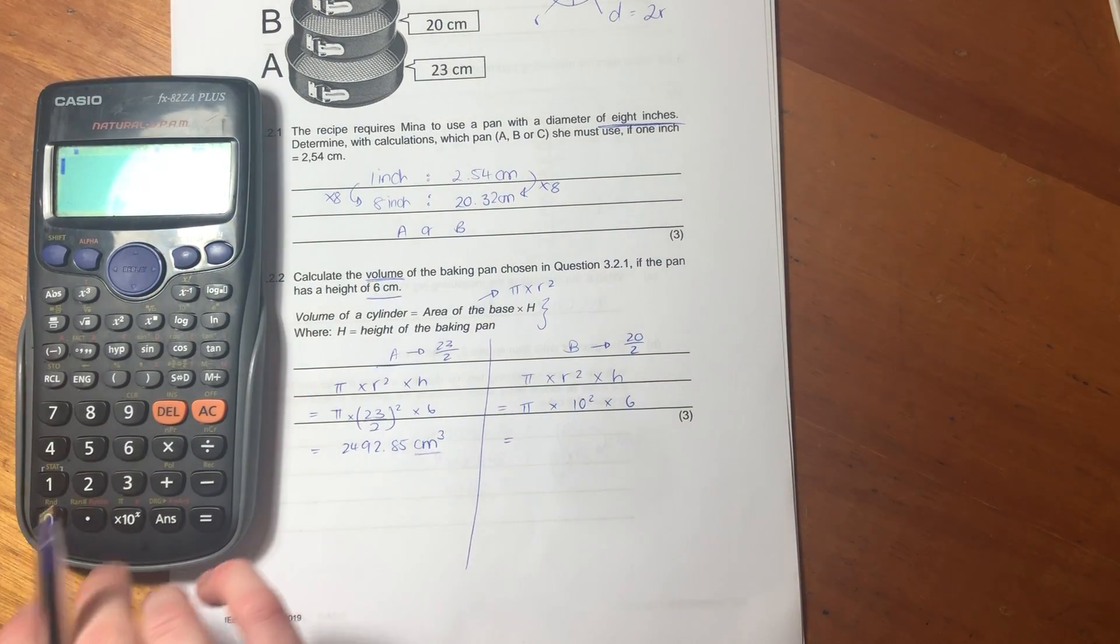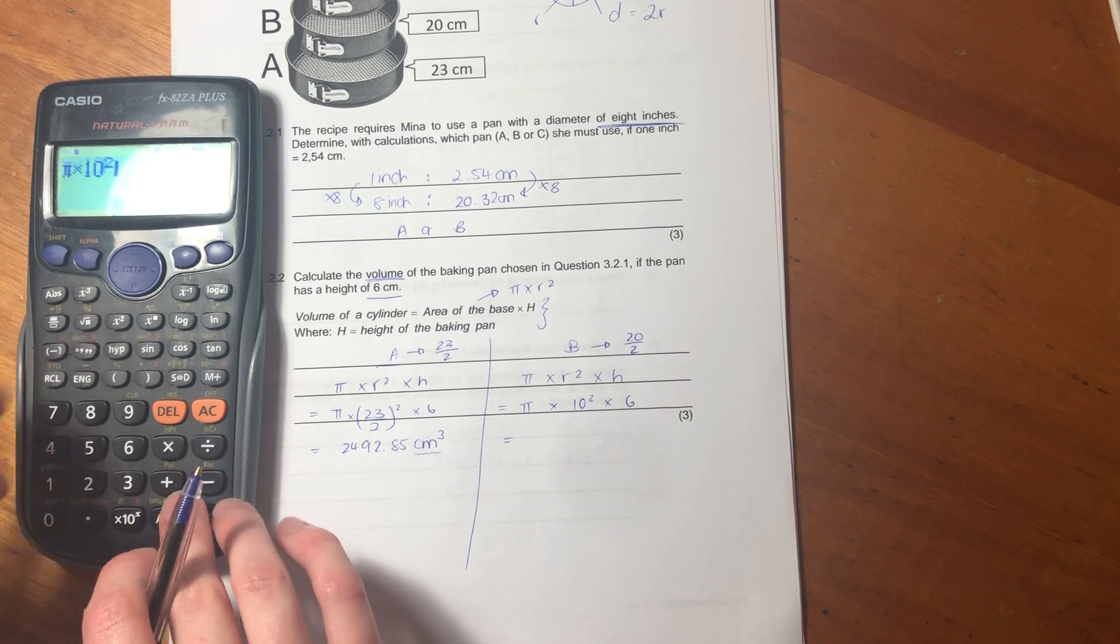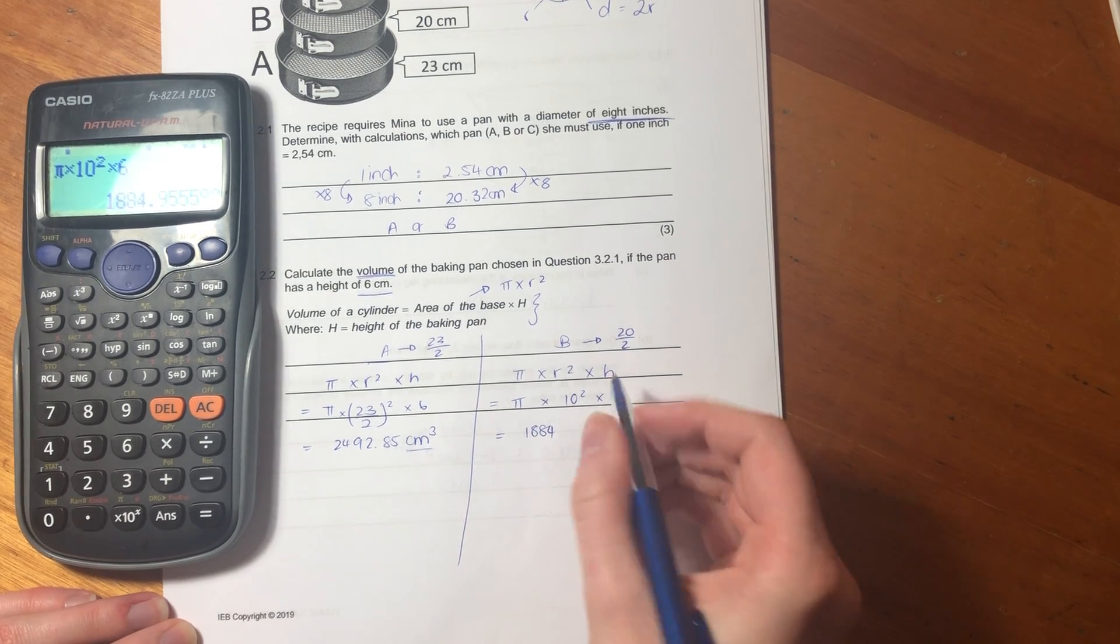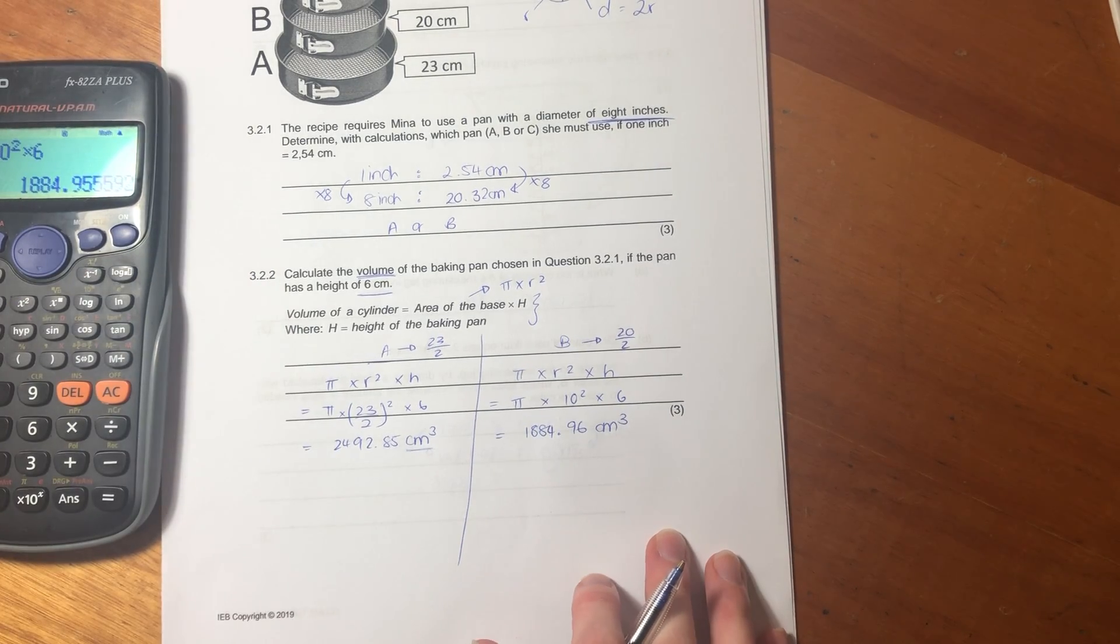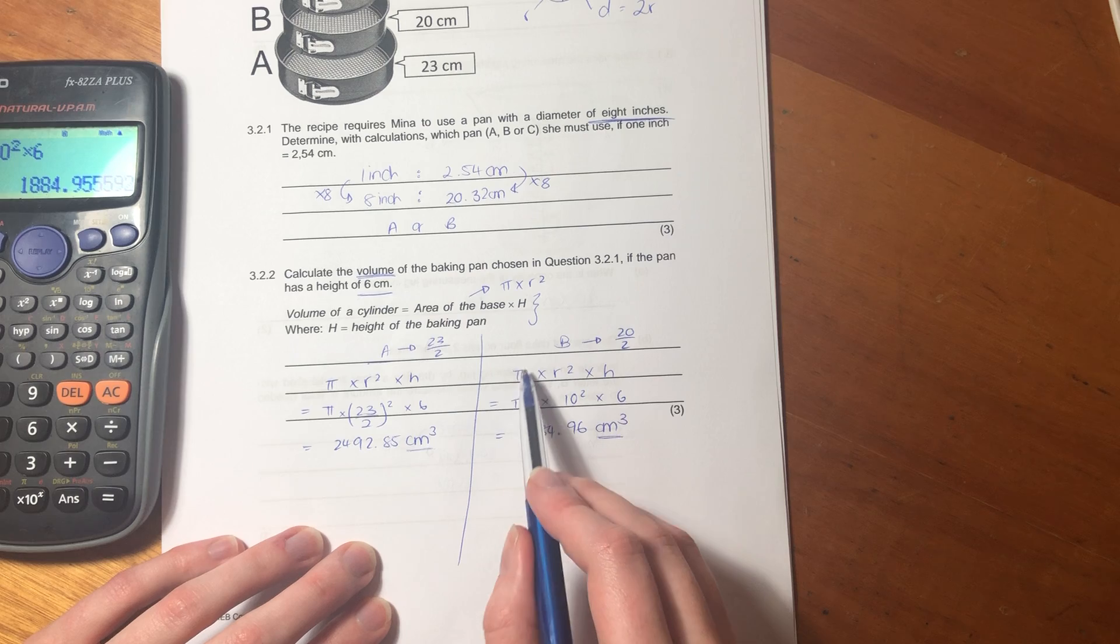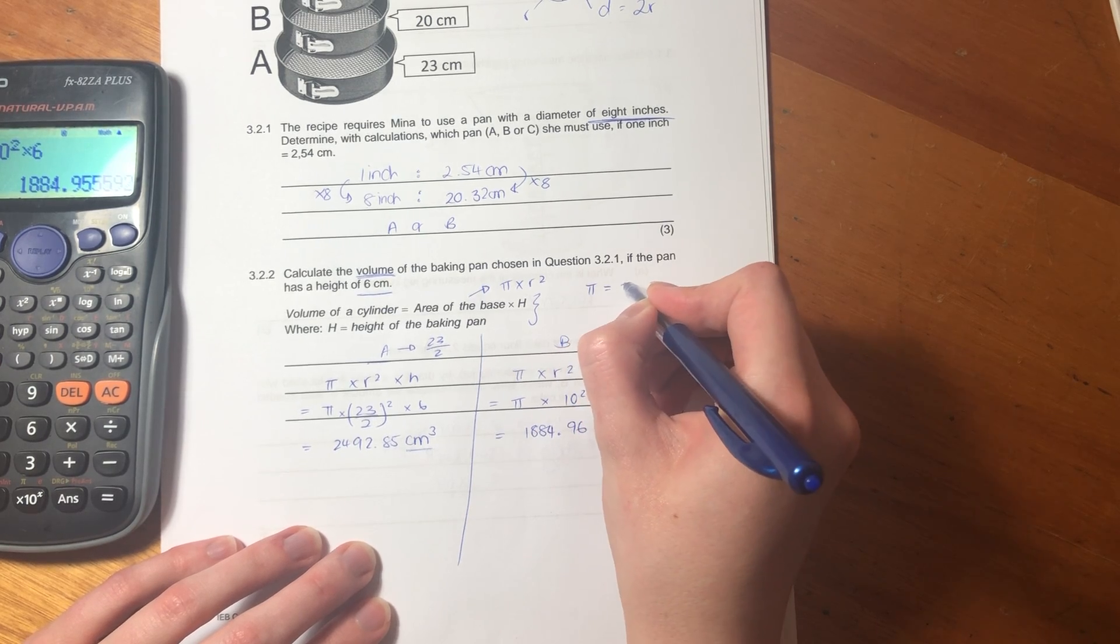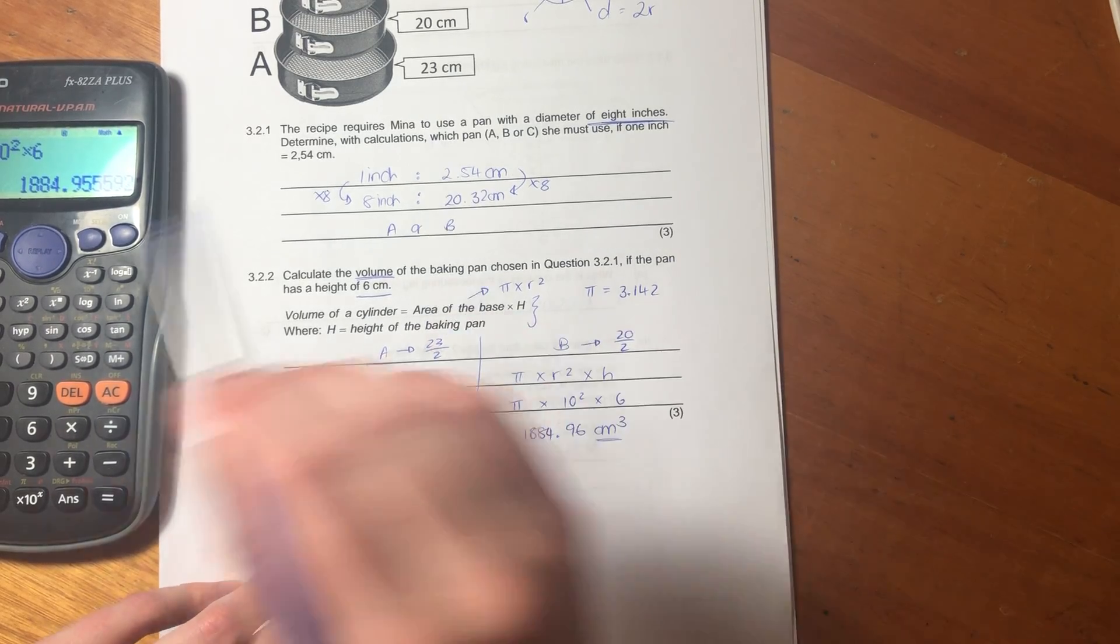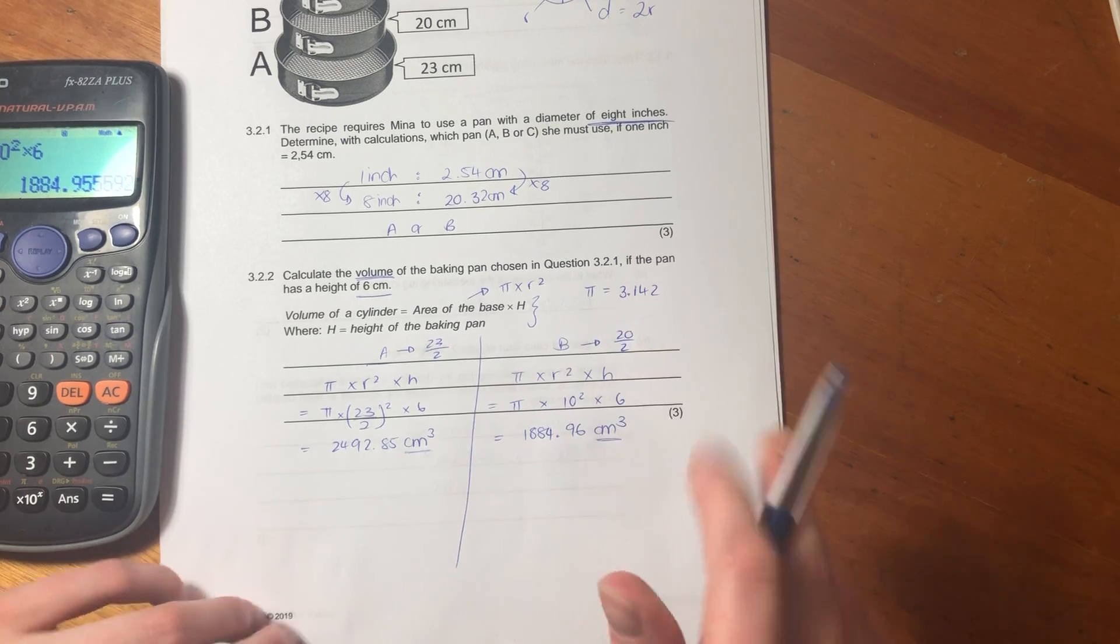Let's do it for B. So B, we can say pi times 10 squared times 6, which gives us 1884.96 centimeters cubed. So it's very important that you firstly round off and then put in your units. The reason I used pi here is because they didn't give us pi in the question. Sometimes they say things like pi equals 3.142 or something like that. If they give you a value of pi, do not use pi in your calculator. Use what they've given you. They don't just give you things for the lols, they give it to you so that you use it.